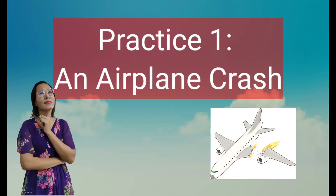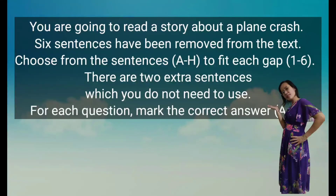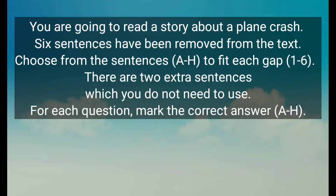Now we will look at practice one. Practice one is about an airplane crash. An airplane refers to aeroplane, so the aeroplane was involved in an accident. You can imagine what happened during the accident. Now let's look at the instruction: you are going to read a story about a plane crash. Six sentences have been removed from the text. Choose from sentences A to H to fit each gap, one until six. There are two extra sentences which you do not need to use. For each question, mark the correct answer A to H. Normally you will be given eight sentences but you only need six sentences as your answers. Make sure you choose them carefully as the answers are quite close to each other.